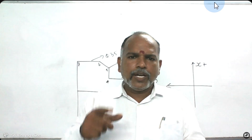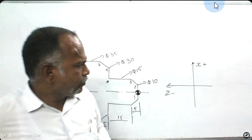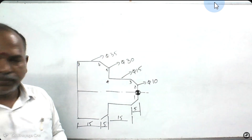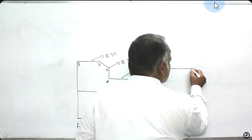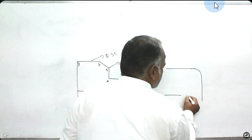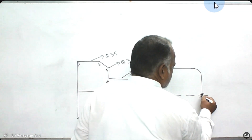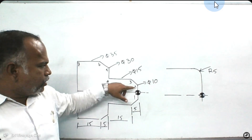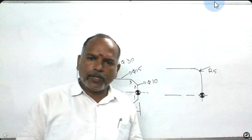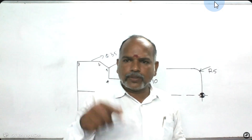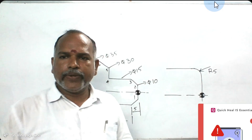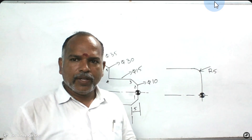If you go for the complex diagrams, there will be some radius values — R2, R3, something like that. How do we calculate this R value?